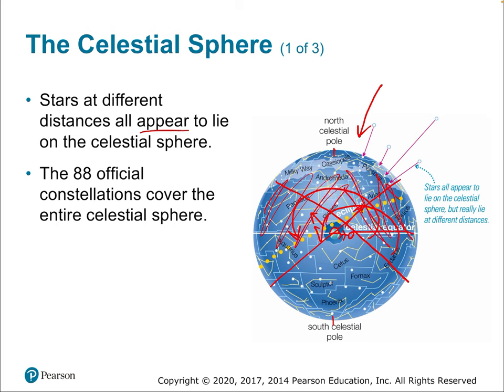Some constellations are seasonal — we can't see them year-round. Ones like Orion. Stars in the circumpolar region we can see year-round. But there's a whole blank section we never see — constellations that can't be seen in North America. This is an example of why thinking about the celestial sphere is so helpful for understanding why we see certain stars in the sky.